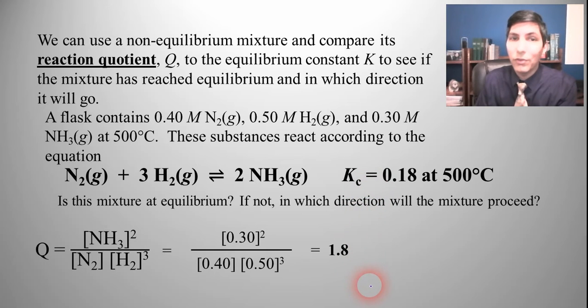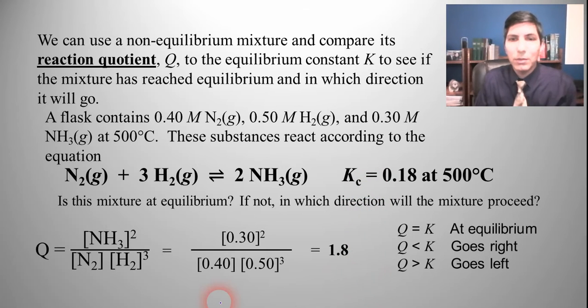In which direction is it going to proceed? Well, here are the choices. If Q equals K, that means we're at equilibrium. If Q is less than K, it's going to go to the right. And if Q is greater than K, it's going to go to the left. Well, Q is greater than K, isn't it? 1.8 is larger than 0.18, so it's going to go to the left.